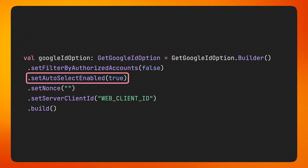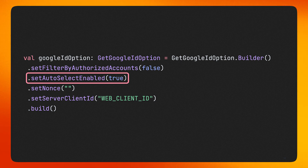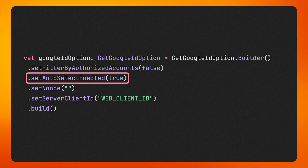You can also enable automatic sign-in for users who have previously signed in with a single account by setting Auto Select Enable to True. When set, users who have a single authorized account will be signed in automatically when Filter by Authorized Accounts is set to True. This removes unnecessary friction for users who have a single account that they use for your app. It's important to highlight that these two fields are only applicable in the bottom sheet flow. Now, let's take a look at the other two fields that can be applied to both the bottom sheet and the button flows.